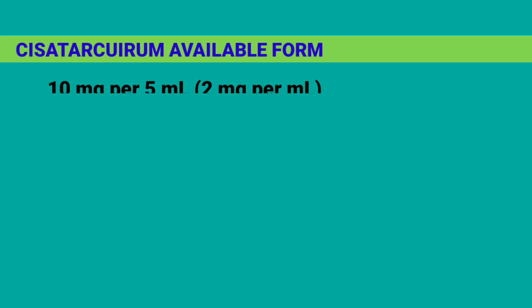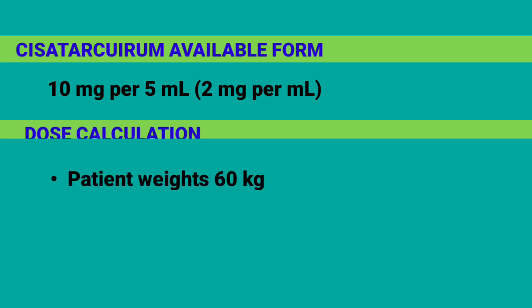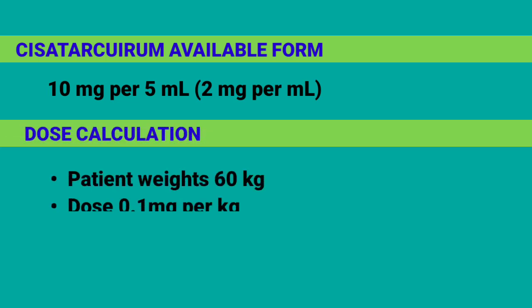Cisatricurium available form: 10 mg per 5 ml, 2 mg per ml. Dose calculation example: patient weight 60 kg, dose 0.1 mg per kg, gives a calculated dose of 6 mg.